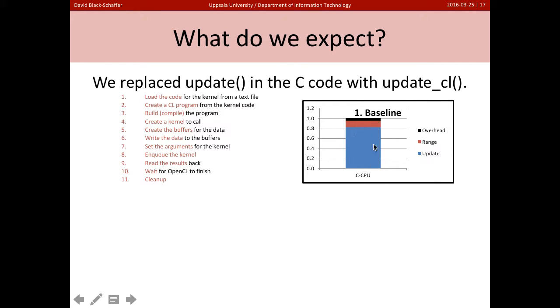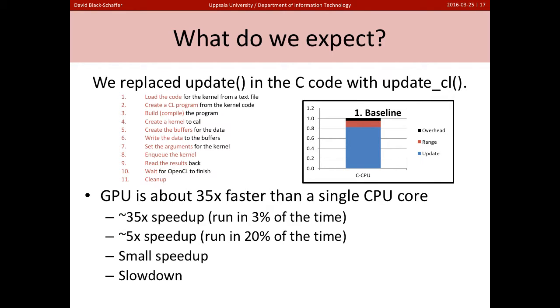Here's the performance that we got before. We saw we were spending 80% of our time running the update. Now the question is, where do we end up with, what performance will we get when we switch this over to our GPU? And remember, our GPU is about 35 times faster than the single CPU core we were using before. So what speed up do we expect?